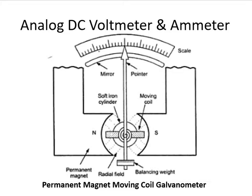Whatever may be the position of the pointer, it indicates the value of the current printed on the scale. This galvanometer may be used for a DC voltmeter as well as a DC ammeter. In the given figure: this is your scale, this is the mirror, this is a pointer, N and S are the permanent magnetic set, and this coil is known as the moving coil. This is a balancing weight. The principle of the PMMC galvanometer is that the current flowing through the moving coil produces a magnetic field, which interacts with the field of the permanent magnet, producing a torque and causing deflection of the pointer. The magnitude of deflection depends upon how much current is flowing through the moving coil.